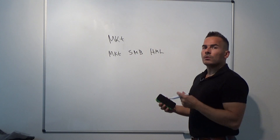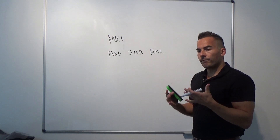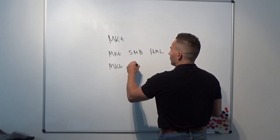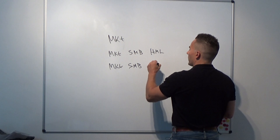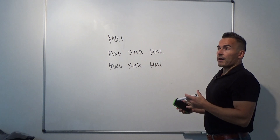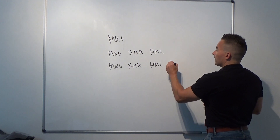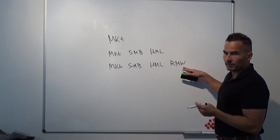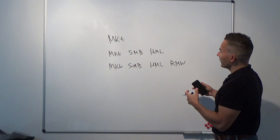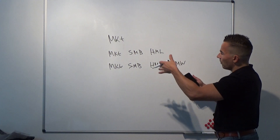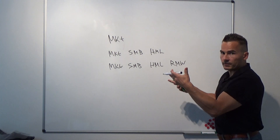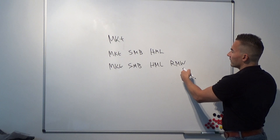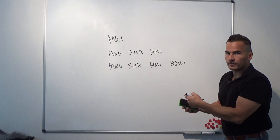If we investigate the Fama-French five-factor model, it contains the market factor, the size factor SMB, the value factor HML, plus the profitability factor RMW — robust minus weak profitability. This is a long-short portfolio that buys firms with high profitability and shorts firms with weak or low profitability.